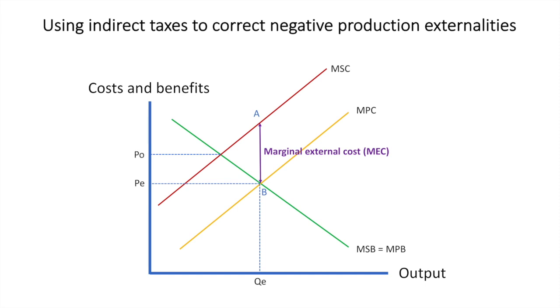Therefore, the socially optimal level of production would be at Q0 at price P0. Due to the overproduction, there is a deadweight loss or welfare loss of triangle ABC.